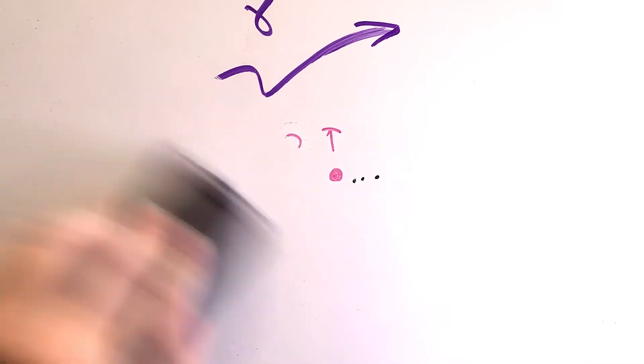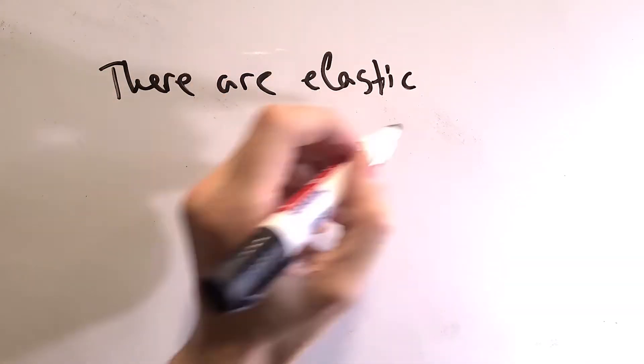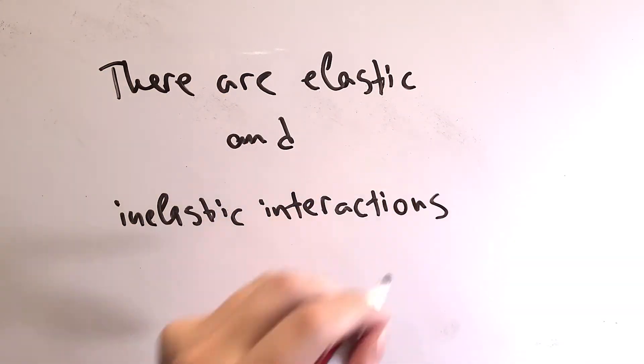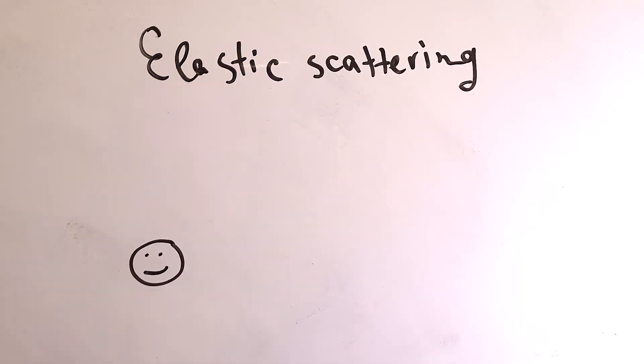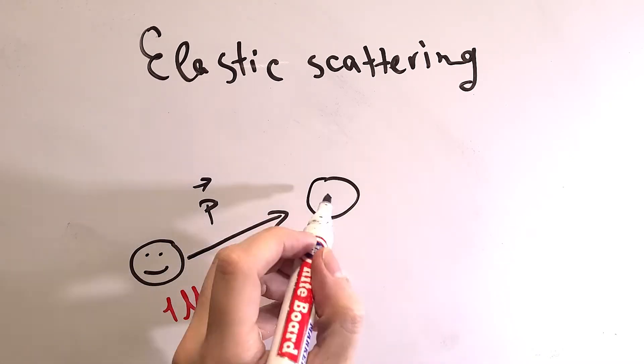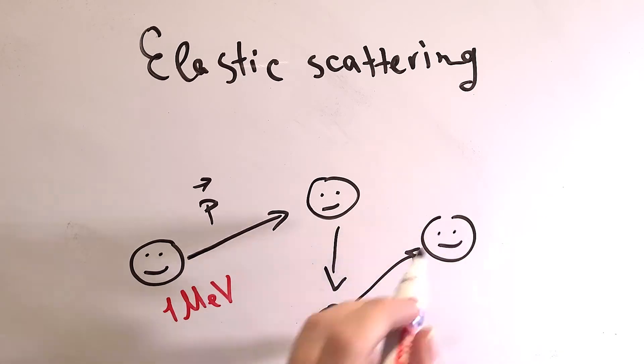What's important here is that there can be elastic and inelastic interactions, like in classical mechanics. Elastic scattering is pretty much neutron diffraction, and it happens like in an example of billiard balls before. The starting momentum does not change magnitude, but changes direction.